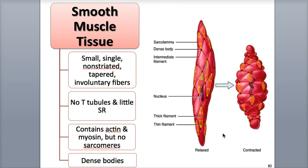The intermediate filaments also connect to the dense bodies, and help distribute tension during contraction, pulling on the dense bodies and shortening the muscle fiber in a twisting, corkscrew-like fashion. Like cardiac muscle, smooth muscle also has a longer contraction and relaxation cycle, because it takes a longer time for the calcium ions to reach the filaments and then exit the fibers after contraction.